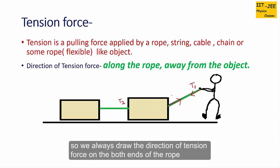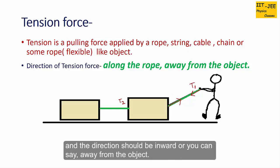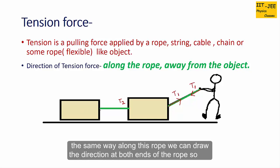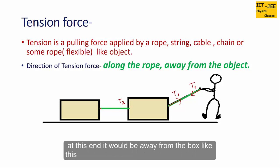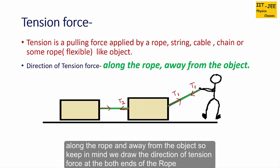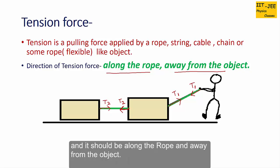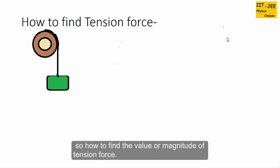We always draw the direction of tension force at both ends of the rope, and the direction should be towards inward, or away from the object. Along this rope we can draw the direction at both ends. At this end it would be away from the box, and from this end away from the box, along the rope and away from the object.